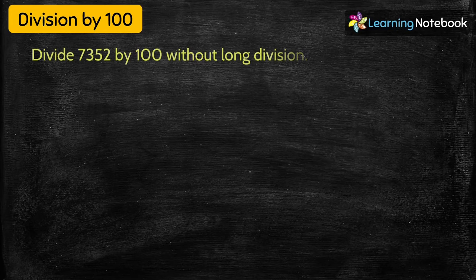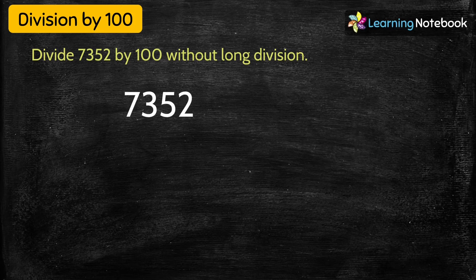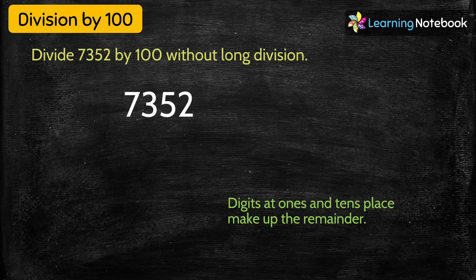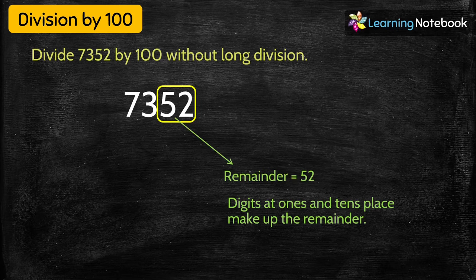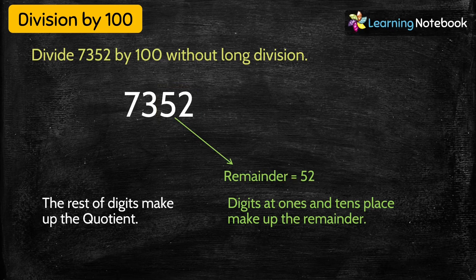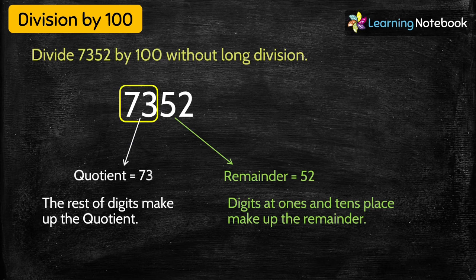One more question: divide 7352 by 100 without long division. Digits at ones and tens place are 52, so remainder = 52. The rest of the digits — 73 — make up the quotient. Quotient = 73, remainder = 52.